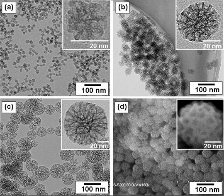Nanoparticles can exhibit size-related properties significantly different from those of either fine particles or bulk materials. Nanoclusters have at least one dimension between 1 and 10 nanometers and a narrow size distribution. Nanopowders are agglomerates of ultrafine particles, nanoparticles, or nanoclusters. Nanometer-sized single crystals, or single-domain ultrafine particles, are often referred to as nanocrystals.